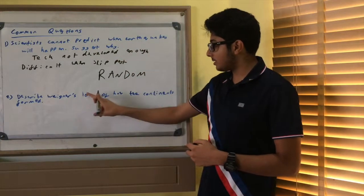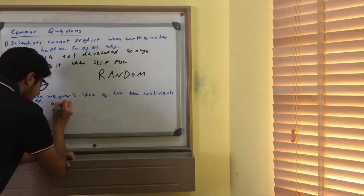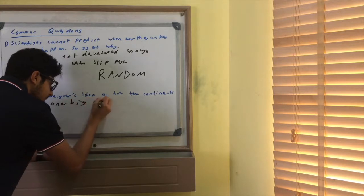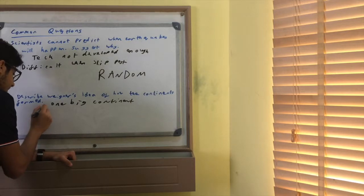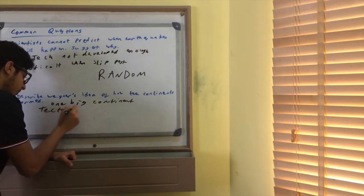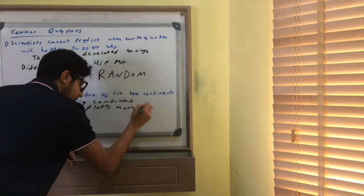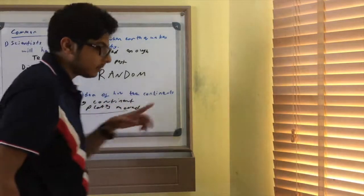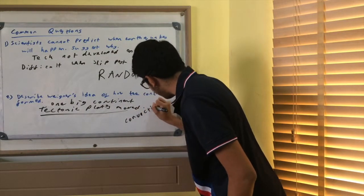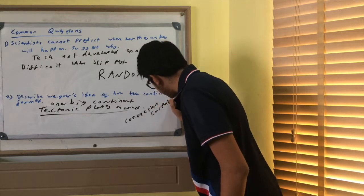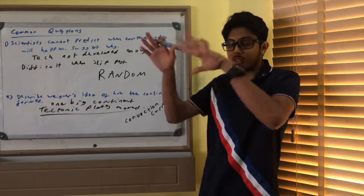Now, describe Wagner's idea of how the continents formed. Okay. So, there was one big continent called Pangaea, and the tectonic plates moved. And that's the key point we should make. Tectonic plates moved. But why did the tectonic plates move? Because of convection currents in the mantle. And obviously, these convection currents, the tectonic plates moving, cause the continents to split apart.